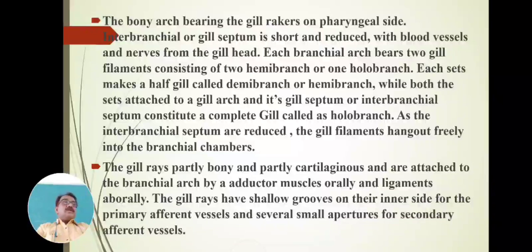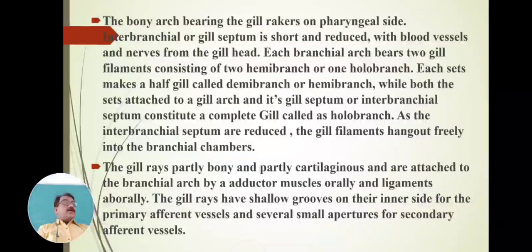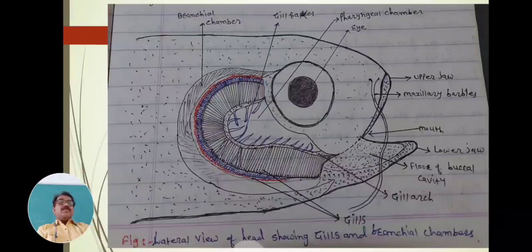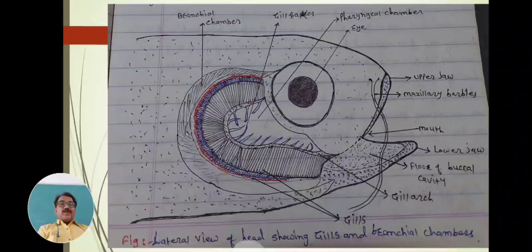In summary, the gill filaments and gill lamellae are partly bony and partly cartilaginous. They are attached around the branchial arch by adductor muscles orally and ligaments aborally. They are connected by primary and secondary afferent vessels, which supply blood from the dorsal aorta to the gill filaments for purification.